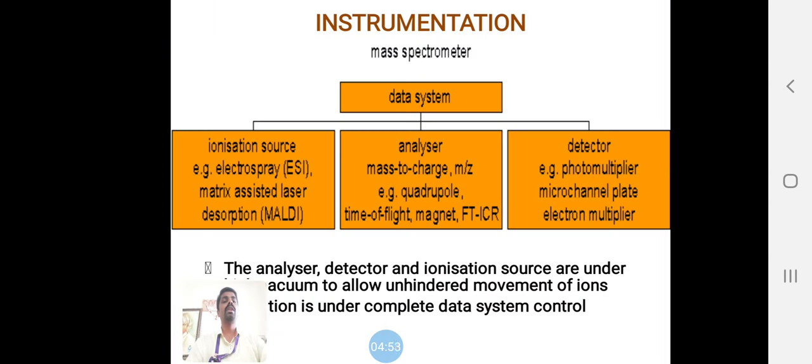This is the instrumentation. We have three classifications: ionization source, analyzer, and detector. Based on these three instrumental main parts, we can identify unknown samples and calculate unknown substances.